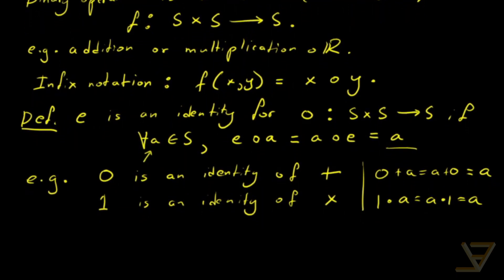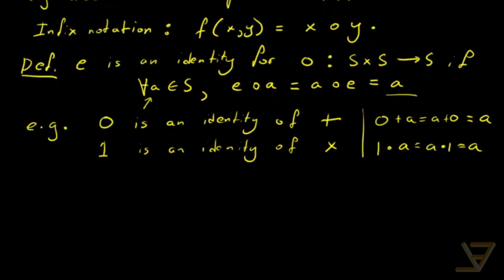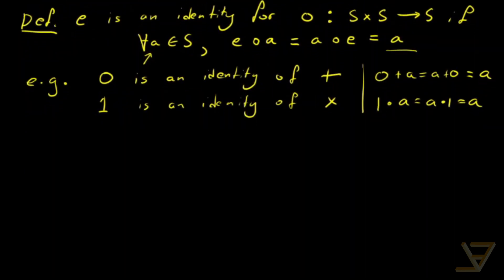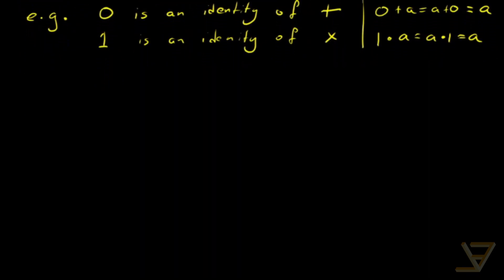Now a natural question comes up: can a binary operation have more than one identity? And the answer is no, the identity is unique. So let's prove that. That's the point of the video today.